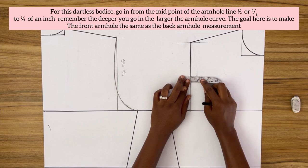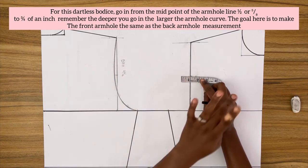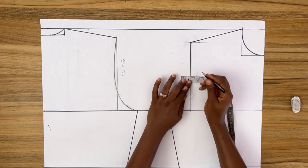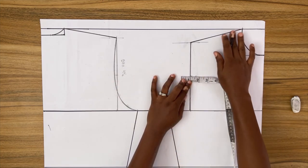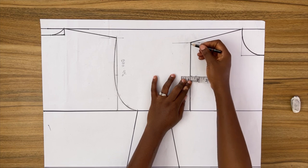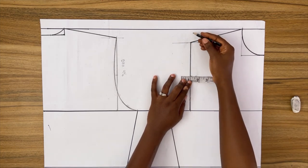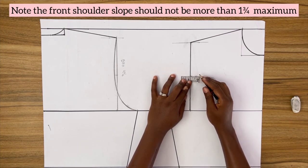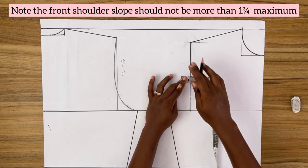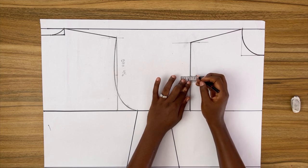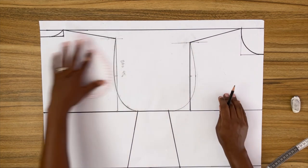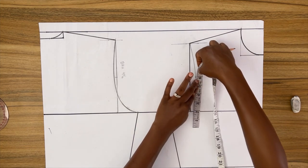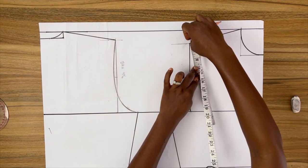The goal is to make the front armhole equal in length to the back armhole. Start by going in half an inch, then take the front armhole measurement and compare it to the back. If it's shorter, go in with three quarter of an inch. If it's longer than the back armhole, come down from the shoulder slope a little more — but do not go below one and three quarter inches for the shoulder slope. I'm going in with five eighths of an inch and using my French curve to draw out the front armhole. The front armhole measures nine and three quarter inches, which matches the back armhole exactly.